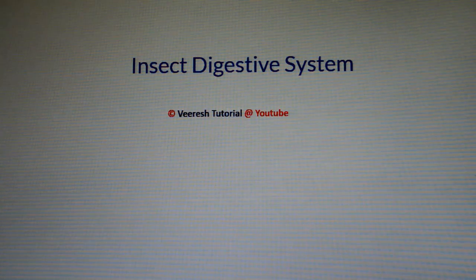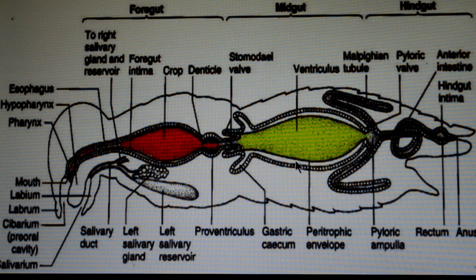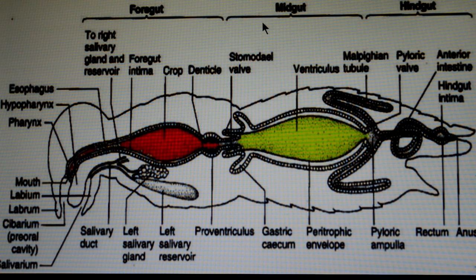In this video, I will explain about the insect digestive system. The insect digestive system is differentiated into three parts: foregut, midgut, and hindgut.